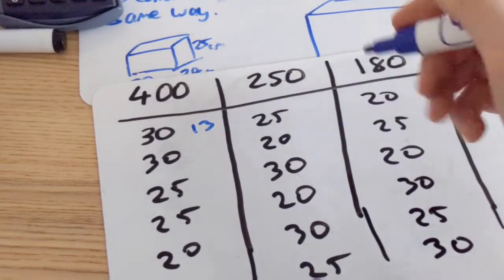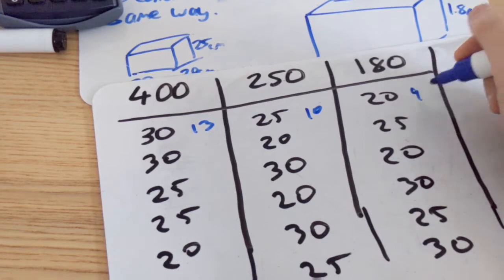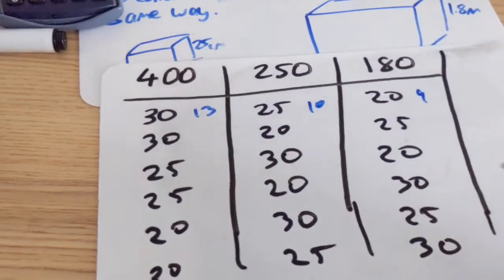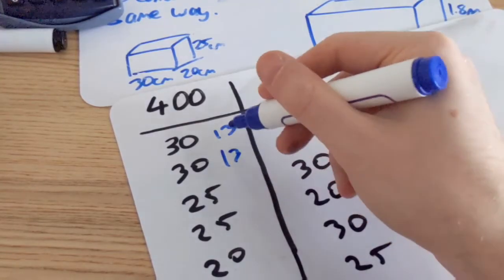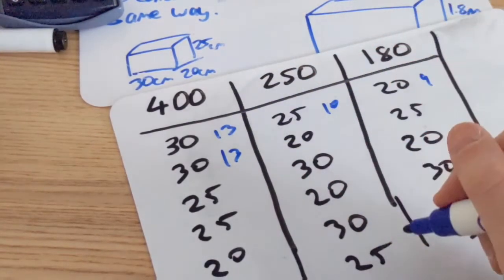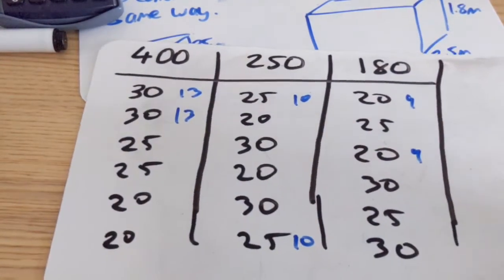You do the same thing with all the sides of the container. So you've got 13, 10 and 9 and then you just go through it. We've got 13 there because there are 30. I've got 25 here, so 25 is also here. I've got 9 here, so I've also got 9 there.